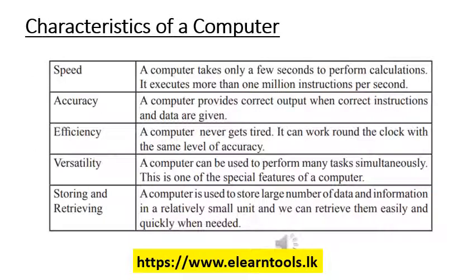Now we come to the characteristics of a computer. There are a few characteristics: speed, accuracy, efficiency, versatility, and storing and retrieving. If we come to speed, the computer can do a lot of calculations within a second — it can run millions of instructions per second. If we come to accuracy, the computer provides correct output when the instructions and data are correct.